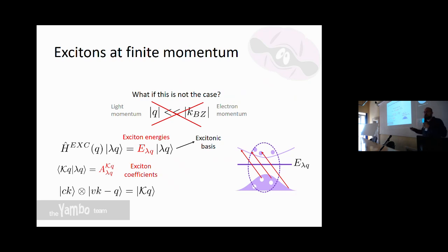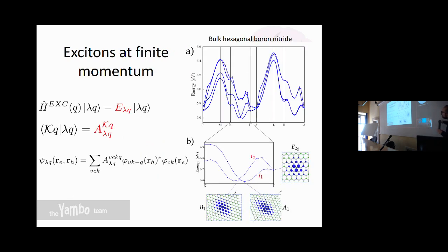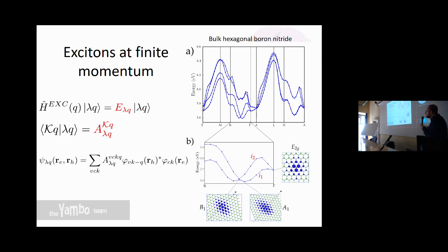Analogously to phonons — where you have a different dynamical matrix for each momentum — here we have a different excitonic Hamiltonian for each q. We diagonalize and find q-dependent energies and coefficients. For example, the exciton dispersion of bulk hexagonal boron nitride shows interesting features: the dispersion is indirect, so the lowest-lying exciton is not at the Γ point — the one that gives optical absorption — but lies elsewhere, with a fine structure visible in a magnified view.